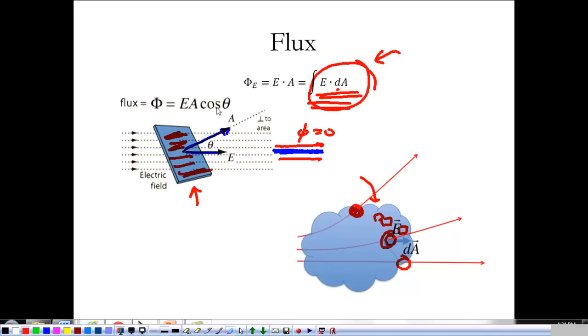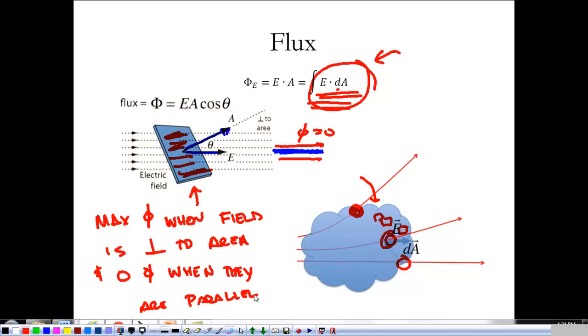The basic idea is we have maximum flux when the field is perpendicular to an area, and we have zero flux when they are parallel.